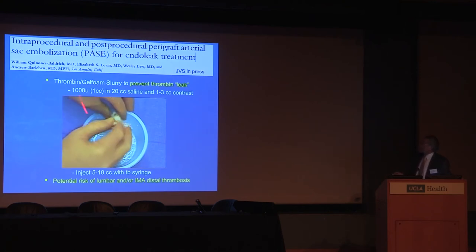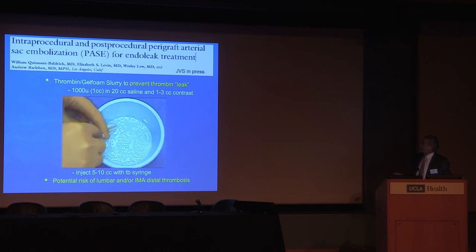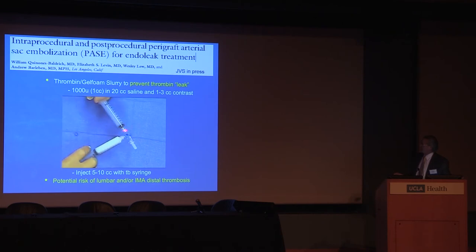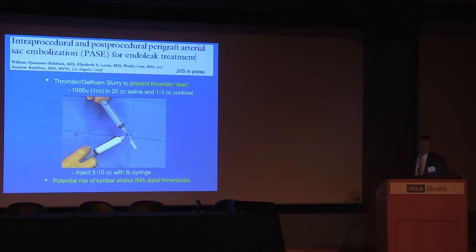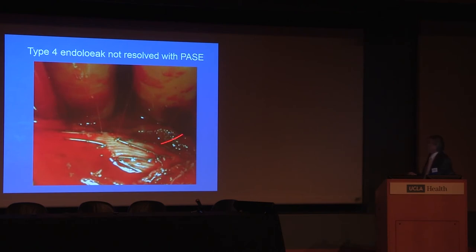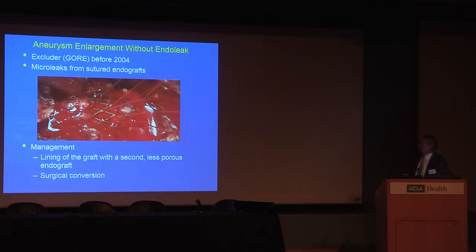This is how we prepare the slurry: we cut the gelfoam into small pieces, put 1,000 units of thrombin in 20 cc's of saline, create the slurry, and add some contrast. Some people ask why not use FloSeal — FloSeal is much more liquid and I'm concerned it may go into lumbar arteries and cause a spinal problem, so this slurry is less likely to do that. Here's a case where the technique didn't resolve the problem and ended in conversion — what we were dealing with was holes in the graft acting like a sprinkler, and no induced thrombosis is going to resolve that.